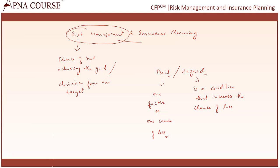Within hazard, we have certain categories. We have physical hazard, moral hazard, and morale hazard. Physical hazard is a physical object that increases the probability of loss. For example, in the case of an airline, bad weather increases the chance of a loss — that is an example of a physical hazard.